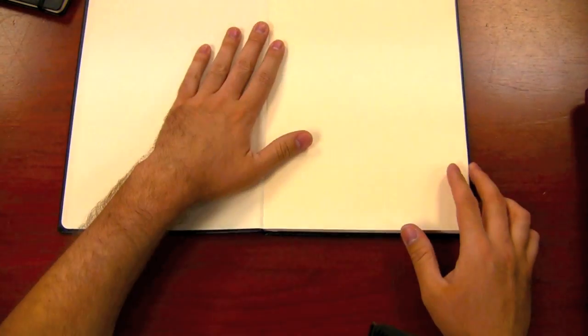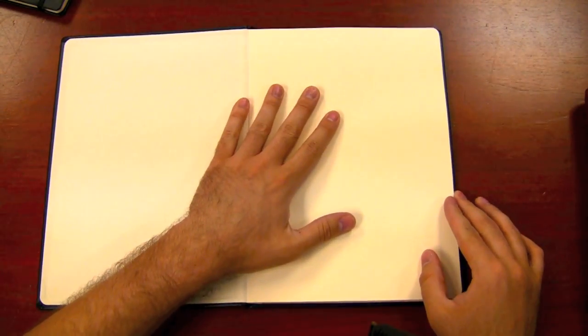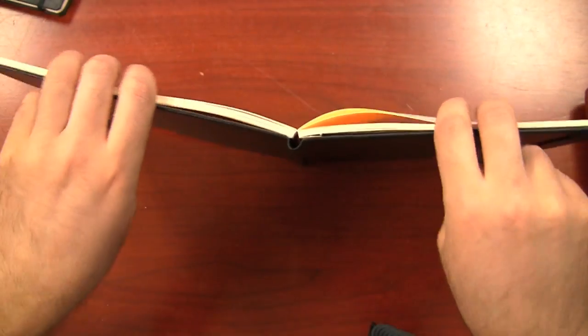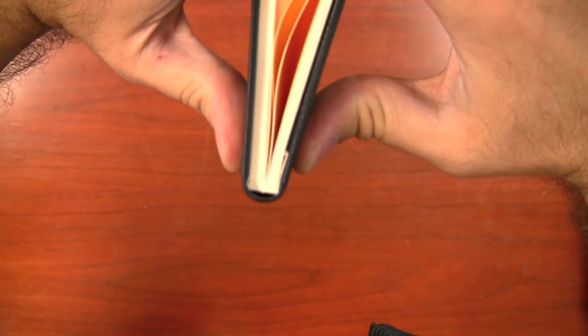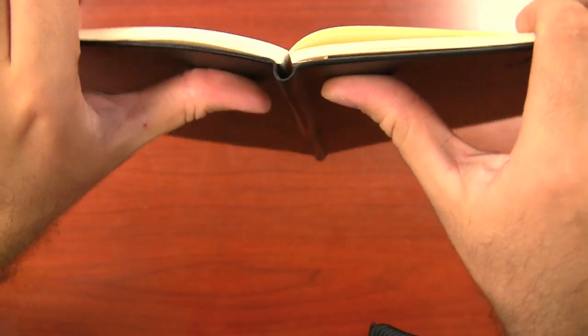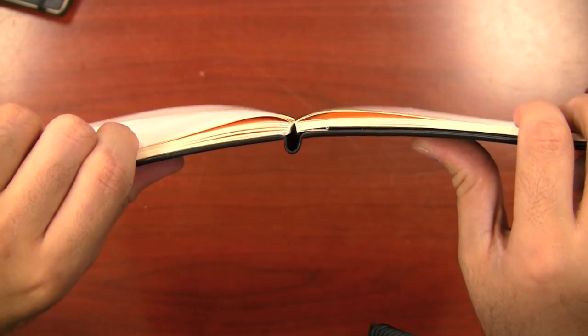One of the best things about the Havanas is the fact that they lay flat pretty much from the get-go. To lay truly flat, they may require just a little bit of coaxing, but if you look, when you open this thing up, the binding actually just kind of splits right down the middle there. That's part of why you get such a good flat-laying notebook.